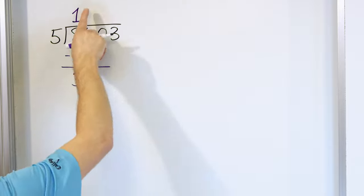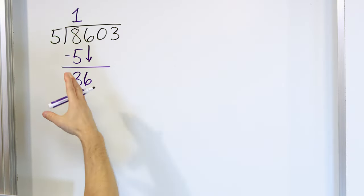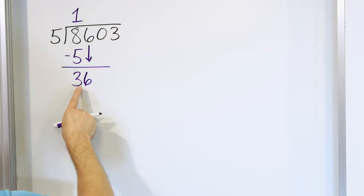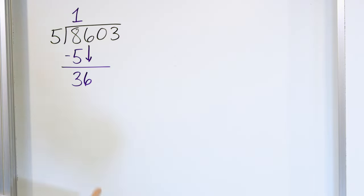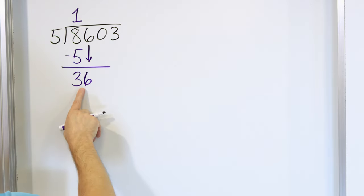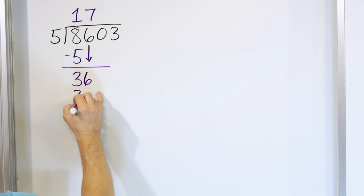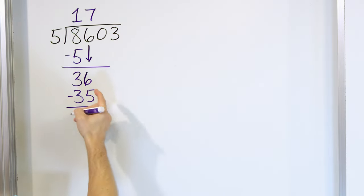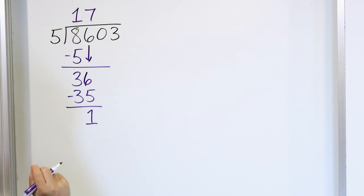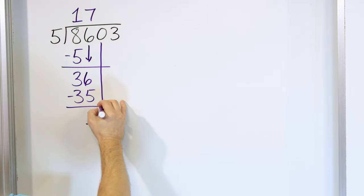We're trying to see 5 times something to get as close as we can to 36. 5 times 7 is 35, but 5 times 8 is 40 — that's too high. So we back up to 5 times 7, which is 35. Write it down here and subtract. 36 minus 35 is just 1. After we subtract, we grab the next digit and bring it all the way down here.